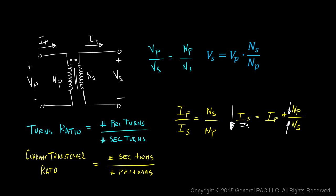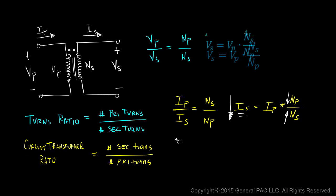Secondary current is small when we have a high number of secondary turns or a low number of primary turns. So what does that mean? It means the diagram with equal primary and secondary turns is technically incorrect for a current transformer, because in that diagram the number of primary turns equals the number of secondary turns — so that is not a good representation of a current transformer.